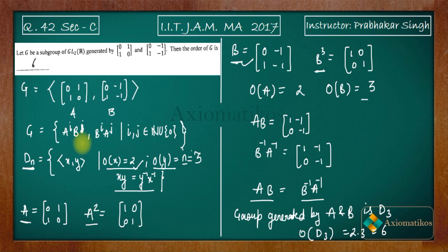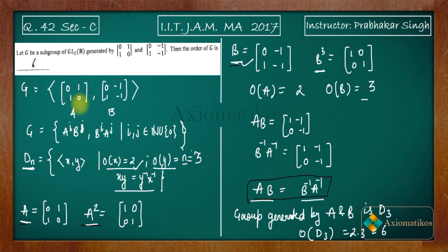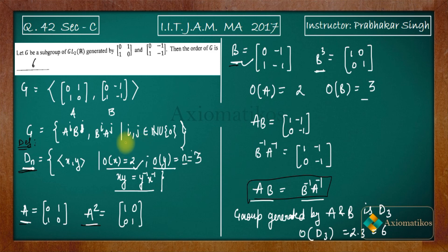So firstly I found the order of A and B, and then I verified that the property AB = B⁻¹A⁻¹ holds. This means the group generated by A and B is actually a dihedral group, satisfying all the properties of the dihedral group definition. If you have any doubt you can ask in the comment section, or join our WhatsApp and Telegram groups — links are in the description. Thank you.